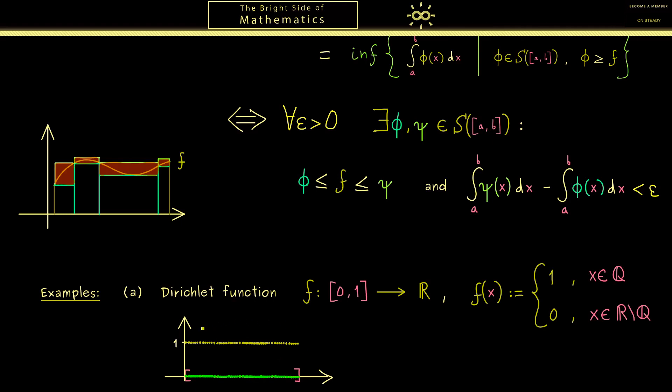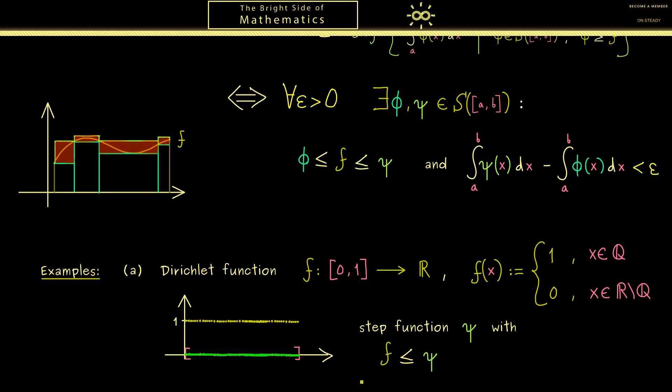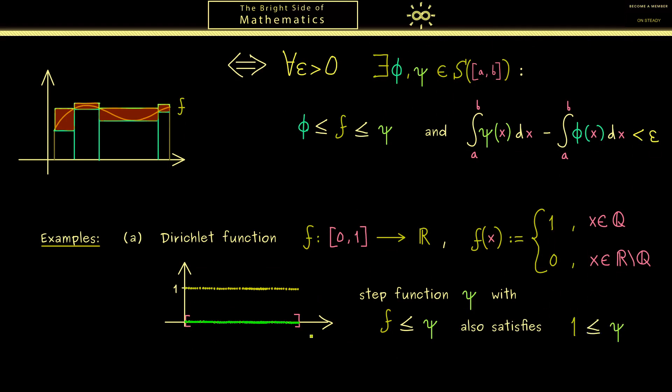You see this when you want to choose a step function ψ that lies above the graph of f. Such a step function then also lies essentially above 1. This is simply because for any segment you choose on the real number line you always find a rational number. Hence the value 1 is always included in such an interval.